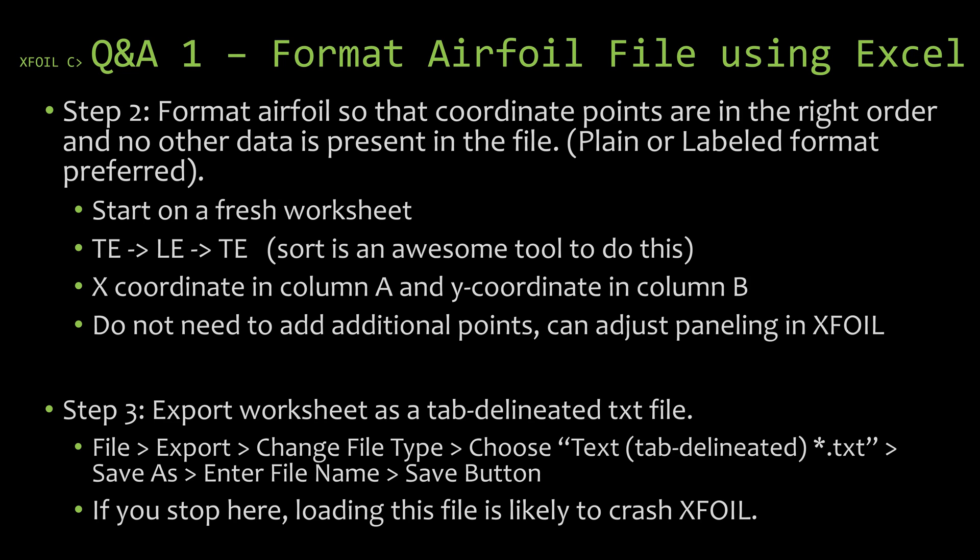At this point we're finished with step two. The airfoil data should be in the proper format with the name of the airfoil in cell A1, the X coordinate points in column A, and the Y coordinate points in column B. It goes from trailing edge over one surface through the leading edge, over the other surface, and back to the trailing edge. Once you have the worksheet in the proper format, go ahead and export the worksheet and save it as a tab-delimited text file.